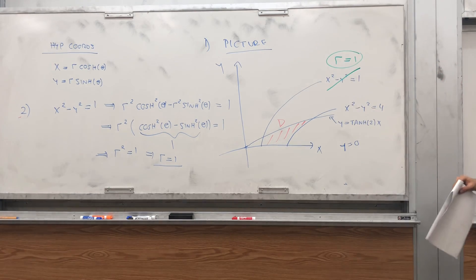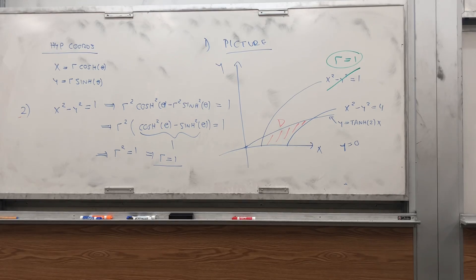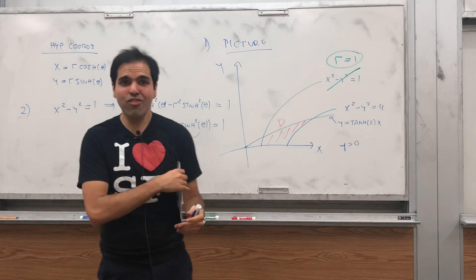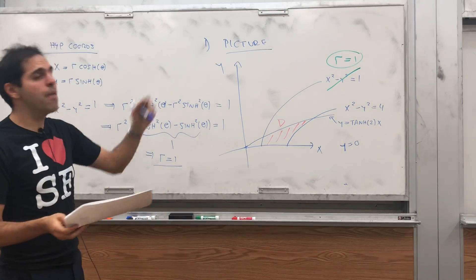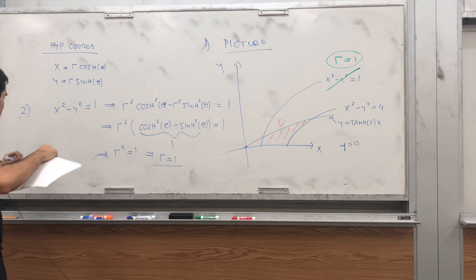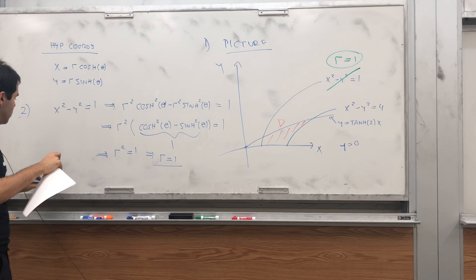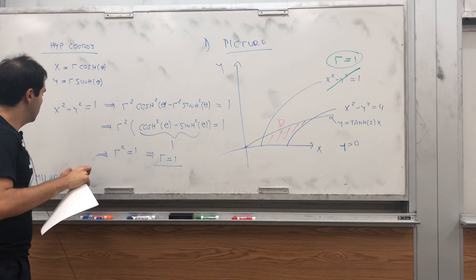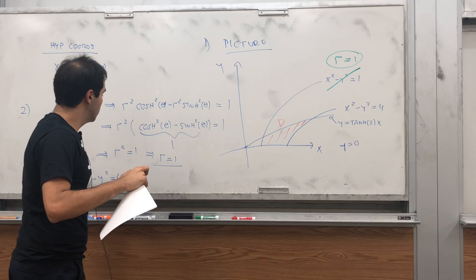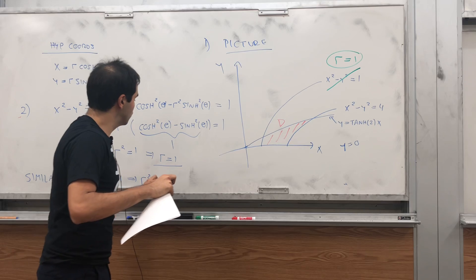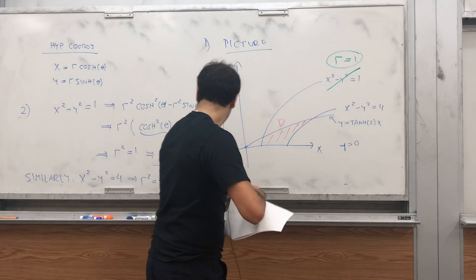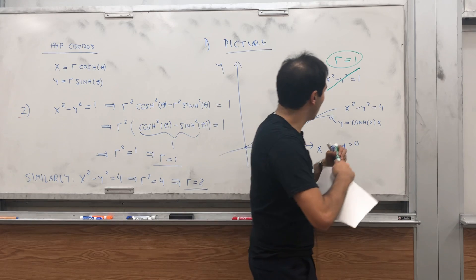And it makes sense. For polar coordinates, the circles are r equals to something. Here, for hyperbolic coordinates, hyperbolas are curves of the form r equals to something. And similarly, if you do the same thing here, if you do x squared minus y squared equals to 4, that gives you r squared equals to 4. So, r equals to 2. And so, this becomes r equals to 2.